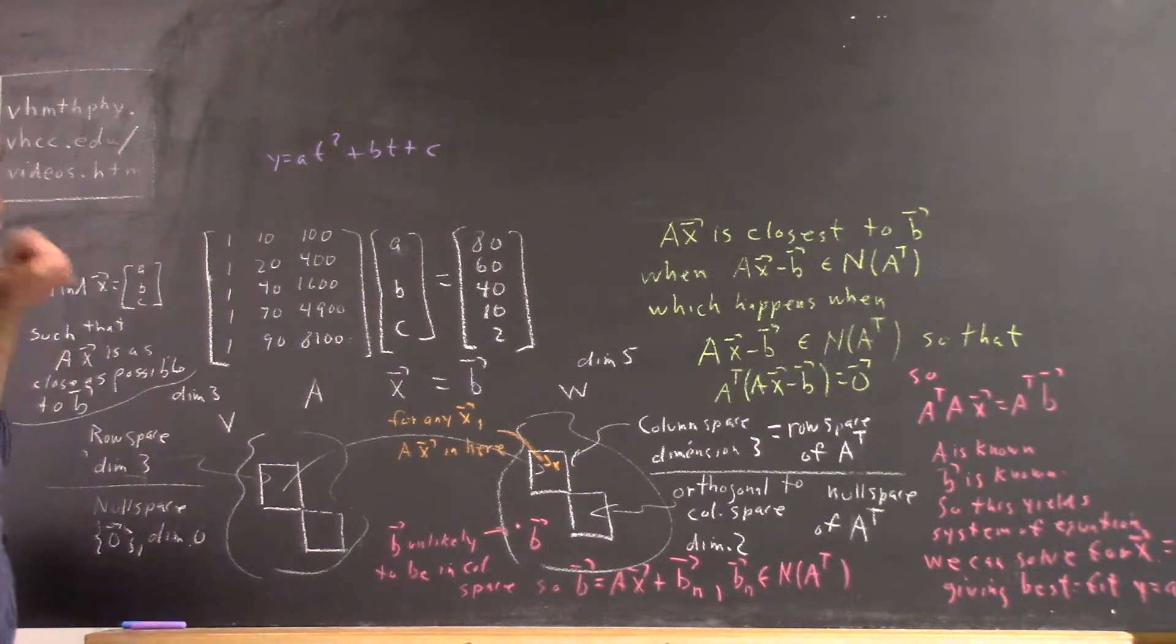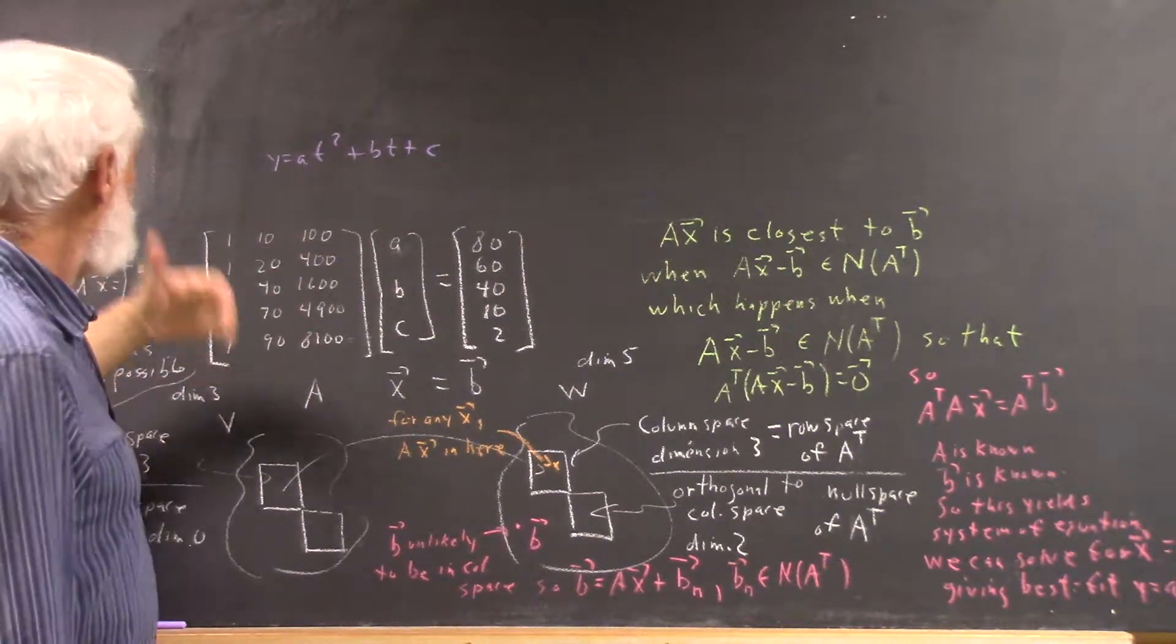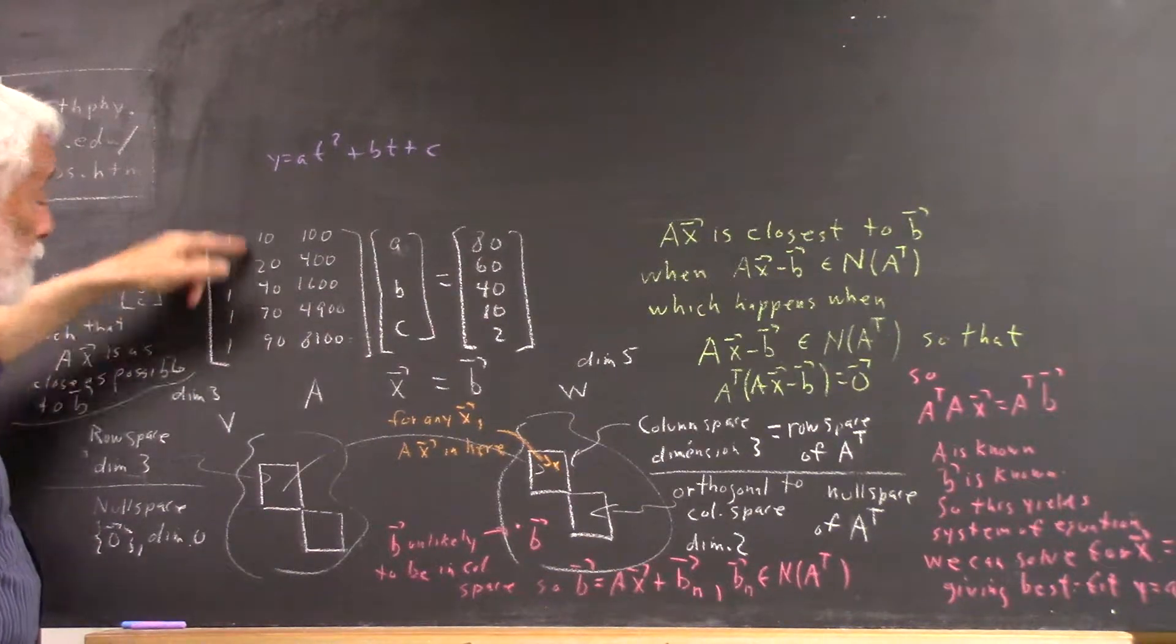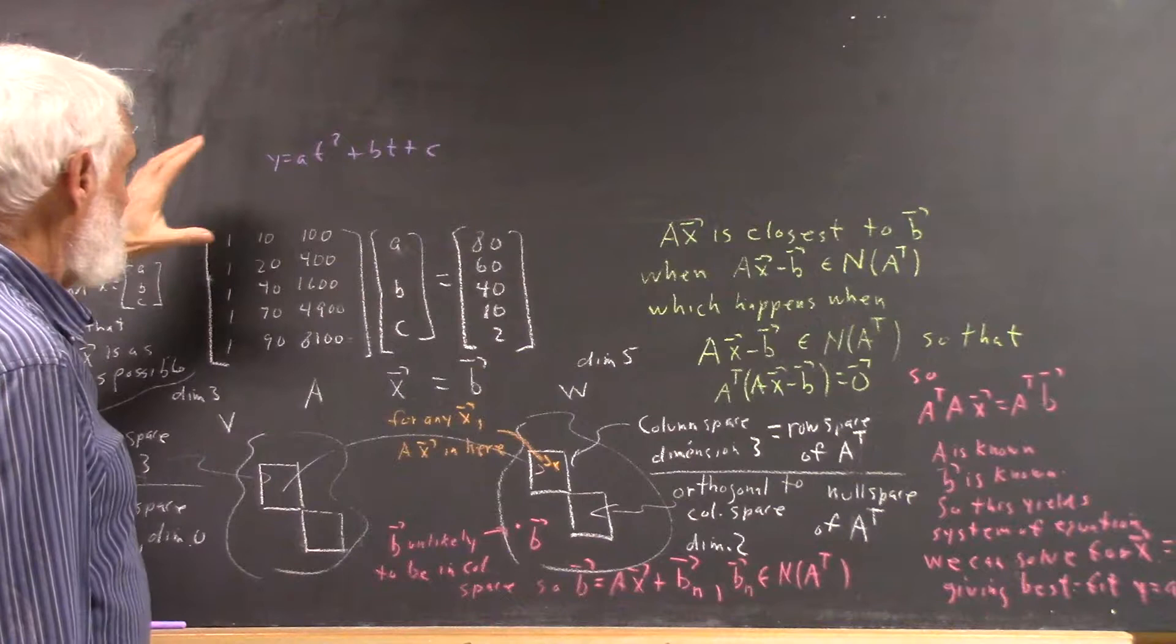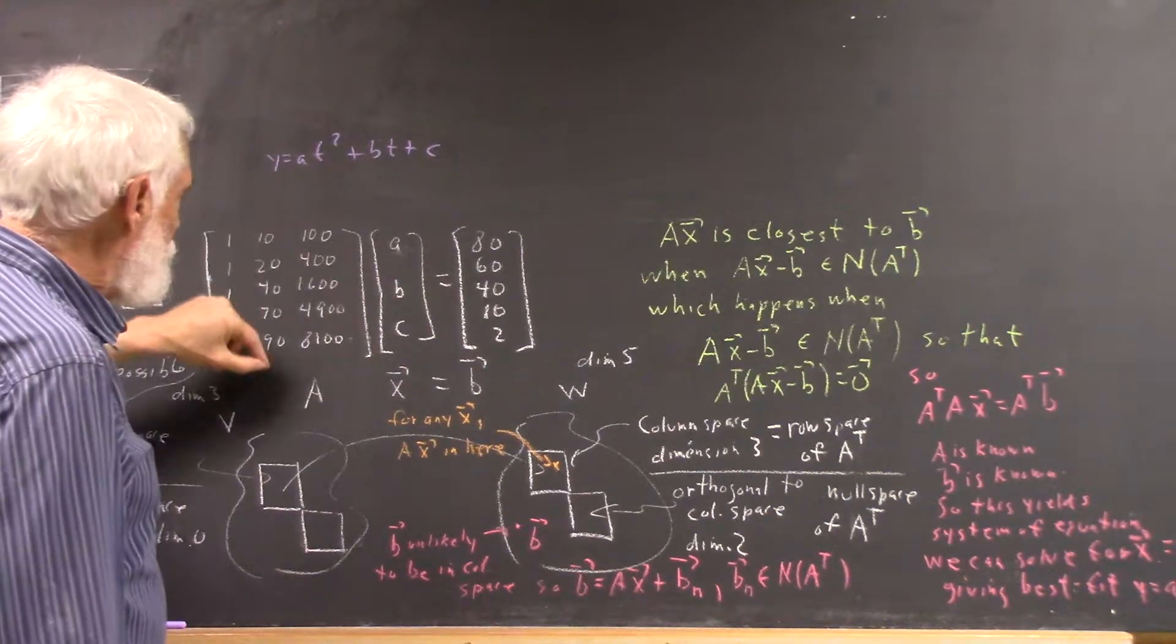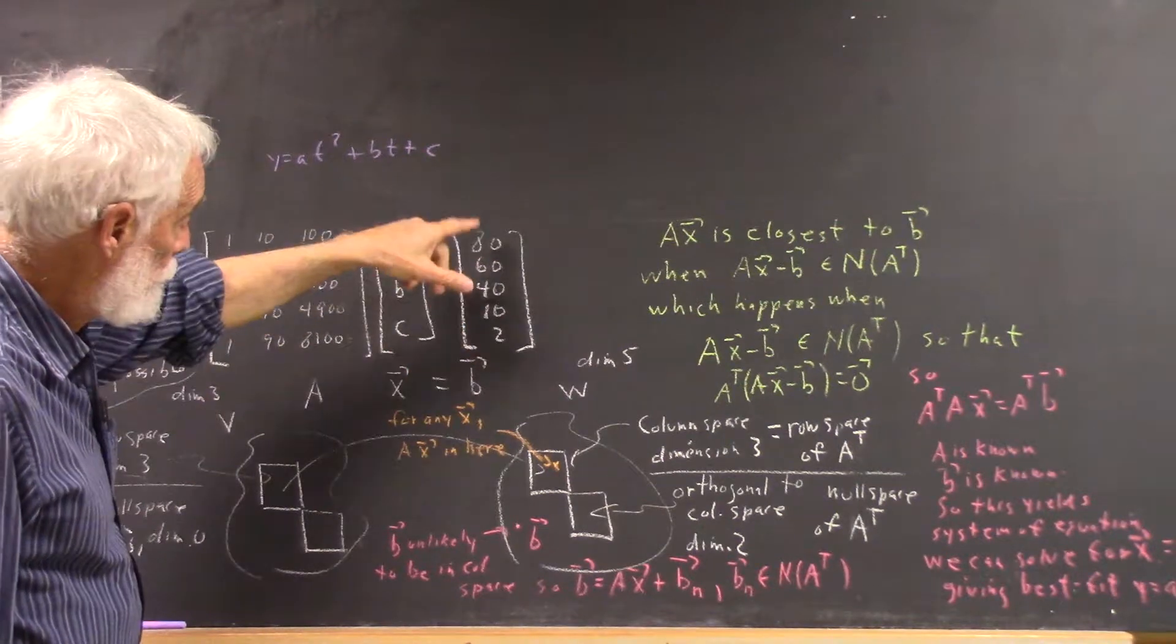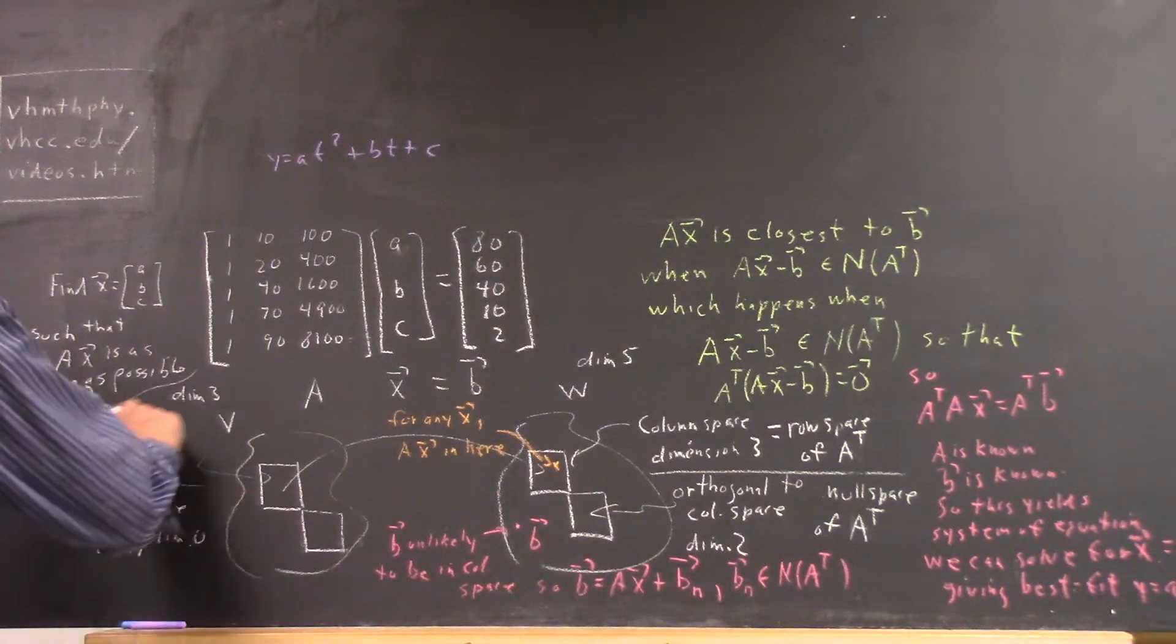So that when we then use A, B, and C for our quadratic model and plug our values of T in, and those values are in this column for reasons that you should understand, when we plug these values of T in we're going to get something very close, hopefully, to these values of Y. That's our goal.